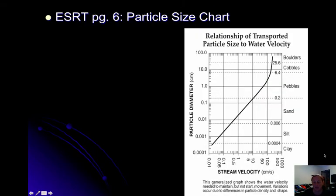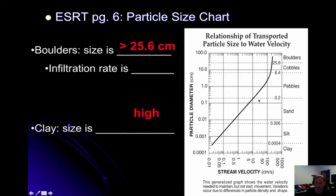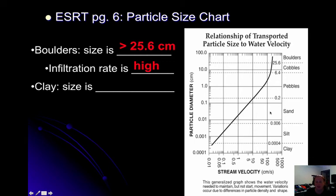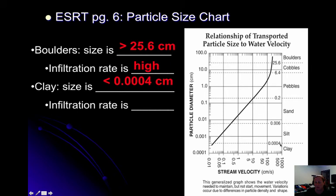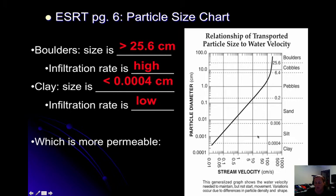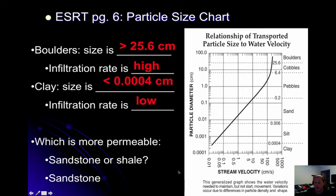Turning to page six in the reference table: boulders are 25.6 centimeters or greater in size, so their infiltration rate would be very high — large pieces let water pass through easily. Clay is less than 0.0004 centimeters, and its infiltration rate is very low and slow. Water does not pass through clay easily. Comparing sandstone and shale: sandstone has sand-sized particles, while shale is clay-sized. So water will infiltrate sandstone much more easily.